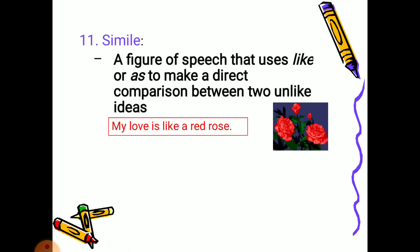Simile is a figure of speech that uses 'like' or 'as' to make a direct comparison between two unlike ideas. For example, 'my love is like a red rose' — love is compared with a red rose. It is a comparison similar to metaphor, but here we use the word 'like' or 'as.'